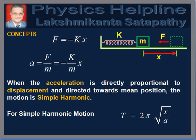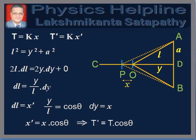When the acceleration of a body is directly proportional to displacement and directed towards the mean position, then the motion of the body is simple harmonic. For a simple harmonic oscillator, the time period is given by T is equal to 2π√(X/A). Now we are in a position to solve the problem using these concepts.